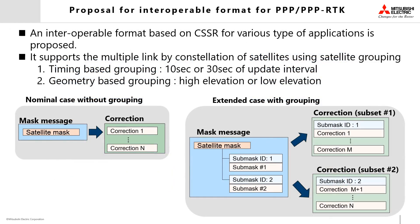In the last part of the paper, we propose an interoperable format based on SSR for basic types of applications. We propose the concept of satellite grouping to support multiple data links provided by satellite constellation. In CSSR, the group of satellites is defined by a satellite mask. The satellite grouping can be extended by including some masks to define a subset of satellites. Two types of satellite grouping, timing-based and geometry-based, are shown in the paper.